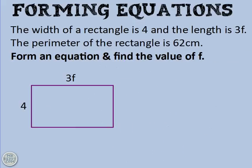Second example. I love it when there's a bit of geometry. So what does this say? It says the width of a rectangle is 4 and the length is 3F. Interesting. I've never seen letters used before in a geometry question. OK. Well, let's read a bit more. The perimeter of the rectangle is 62 centimeters. Right. Form an equation and find the value of F. So I'm scratching my head at this point, thinking I've not seen a question like this, not sure what to do, but there's probably enough information in the question for me to figure out what I'm supposed to do.